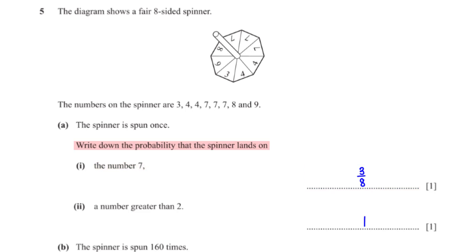Write down the probability that the spinner lands on a number greater than 2. This probability equals the number of sections with a value greater than 2, which is 8, divided by the total number of sections, also 8. So 8/8 = 1.